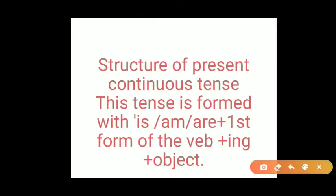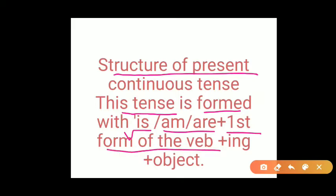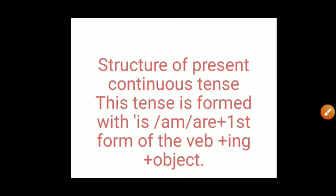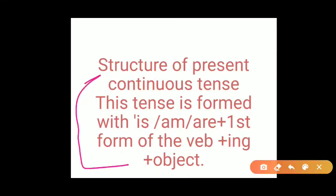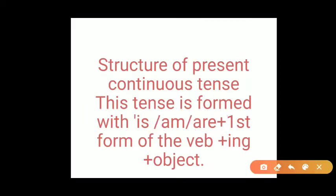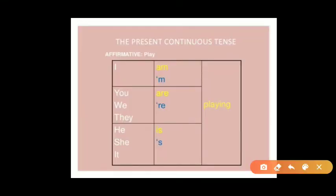Let's see the structure of present continuous tense. The affirmative structure is formed with 'is/am/are' followed by the first form of the verb with '-ing', then the object. According to the subject, we choose the helping verb: 'is' is used with singular subjects, 'am' is used with 'I', and 'are' is used with plural subjects.